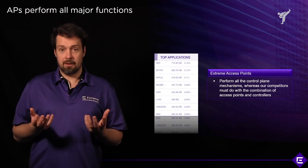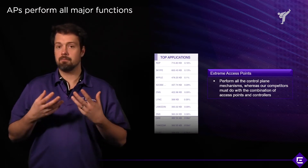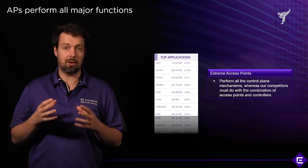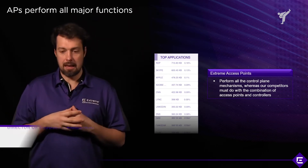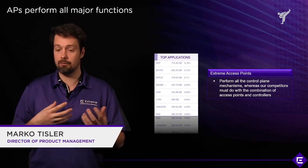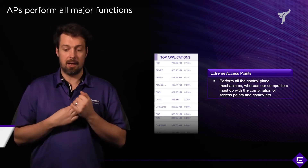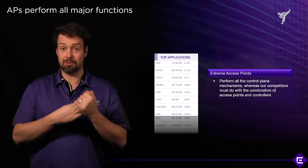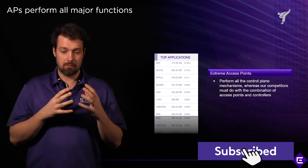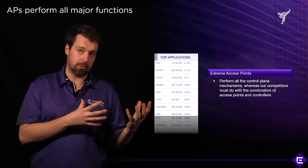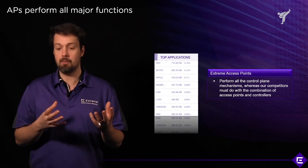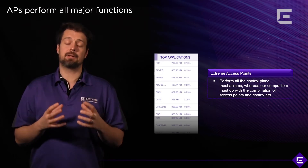In terms of implementing features — additional features beyond just forwarding data, things like firewalling, security features, application visibility and control, denial of service detection and prevention — typically those were done on a controller. In the Extreme Cloud wireless scenario, these are done on the AP.